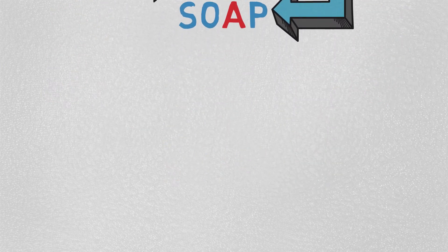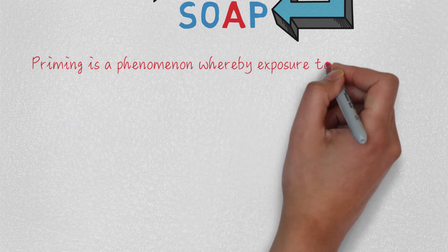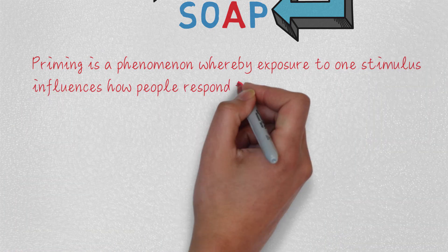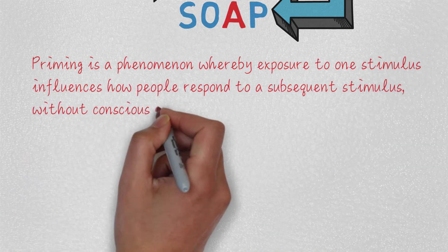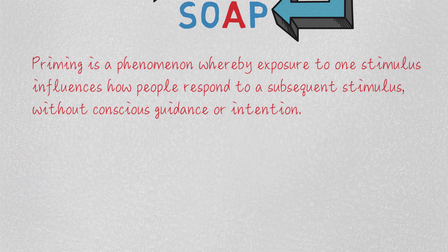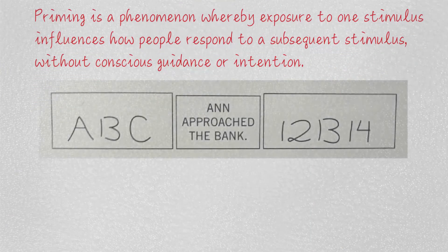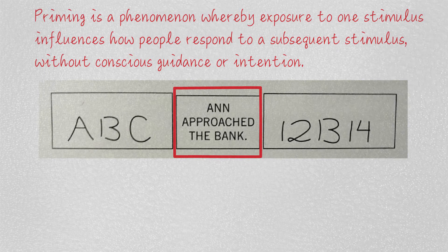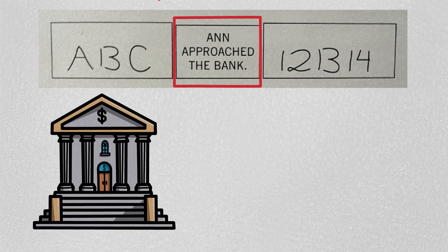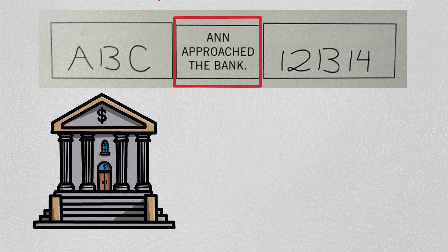So priming is a phenomenon whereby exposure to one stimulus influences how people respond to a subsequent stimulus without conscious guidance or intention. Similarly, when you read 'Ann approached the bank,' what did you visualize in your mind? Ann approaching the bank to withdraw or deposit cash?